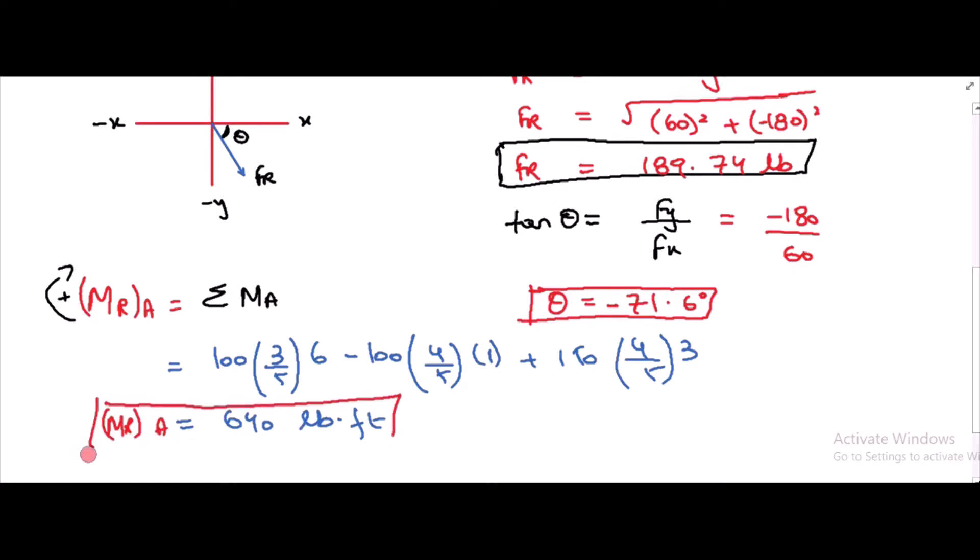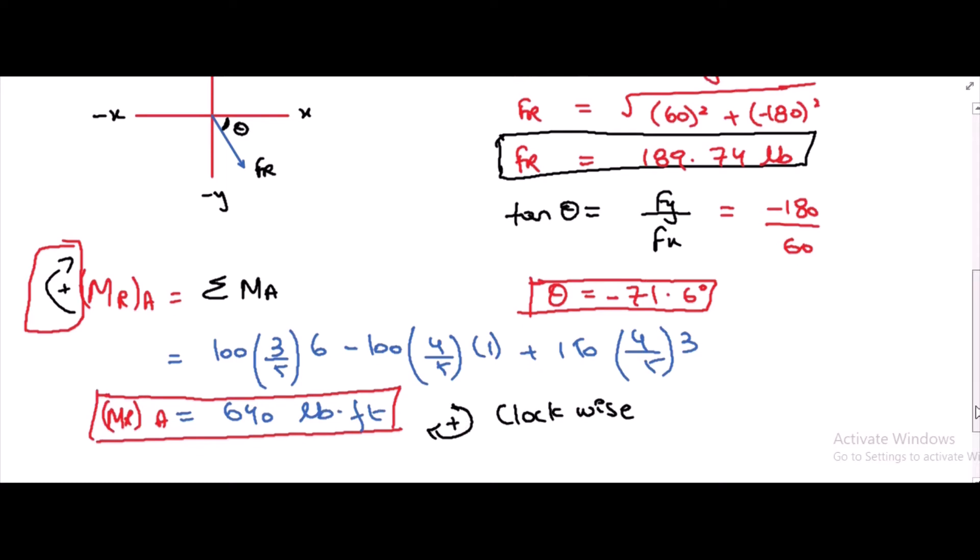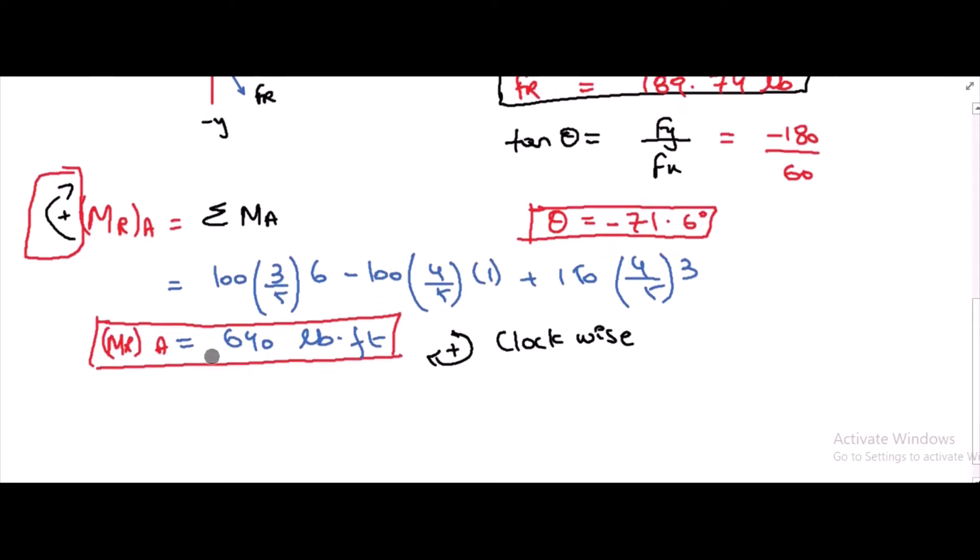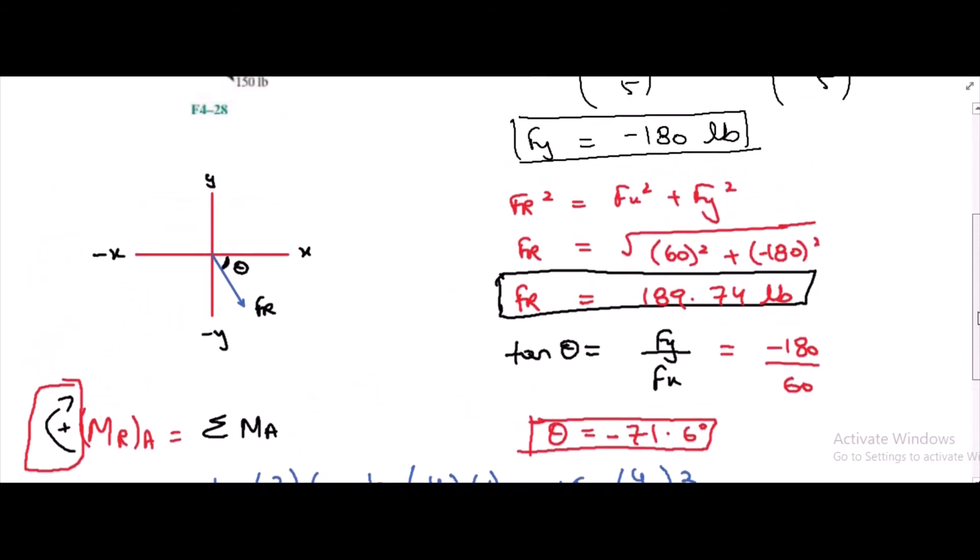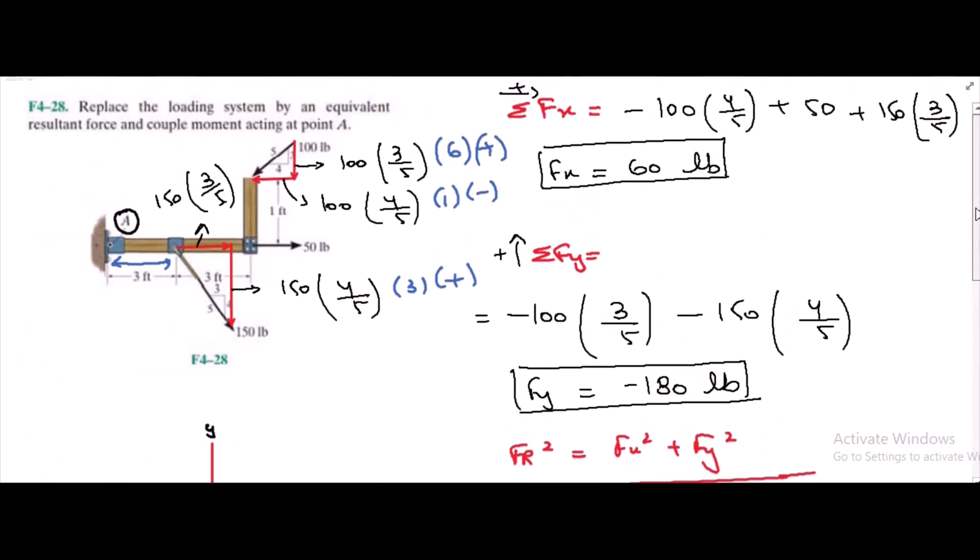And what should be the direction of this moment? Since our answer is positive, it means that our answer is in the same direction as we have considered: clockwise. So our moment is clockwise. If we somehow end up with the negative answer, then the direction could be opposite of what we have assumed. This is the answer to this problem. I hope you will find this video helpful. If you do, please feel free to subscribe to this channel and turn on the bell icon for daily updates.